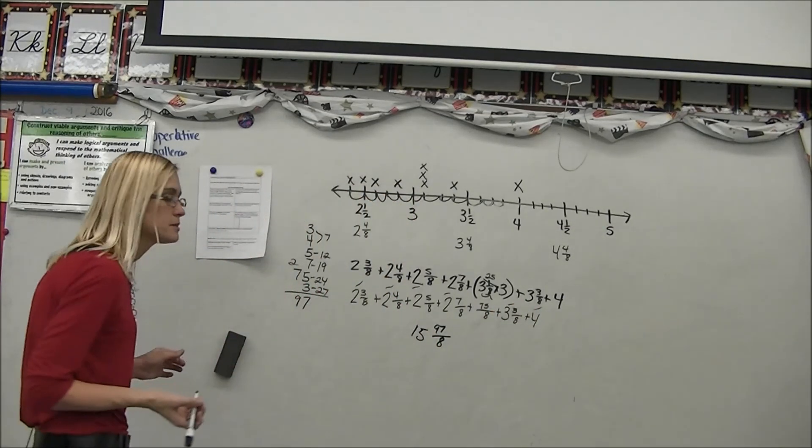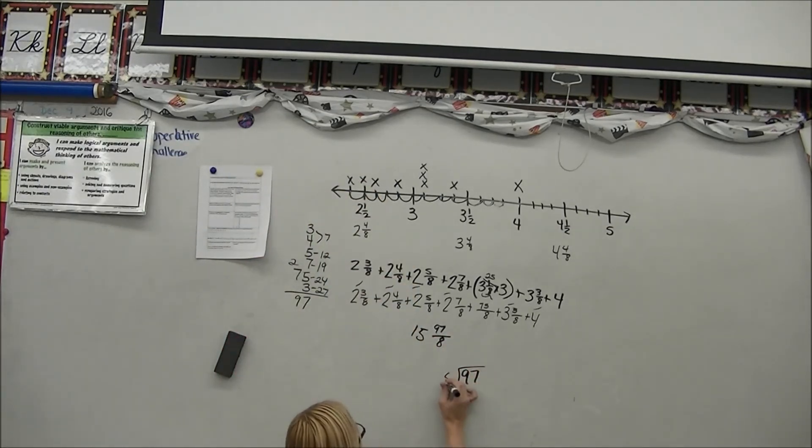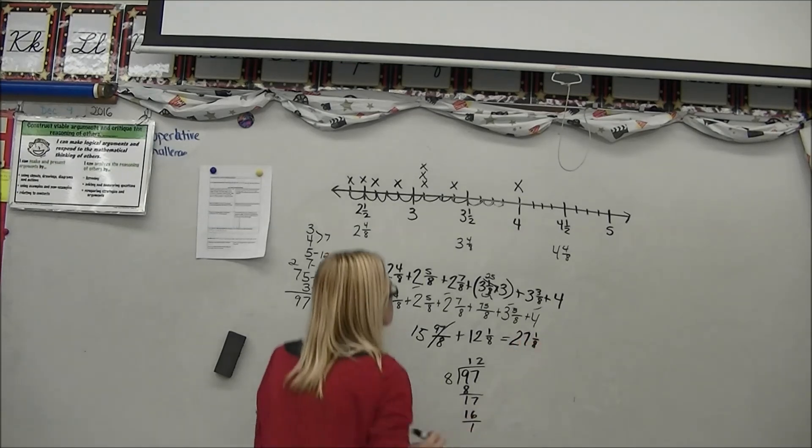So how many times can 8 go into 97? 97 divided by 8 can go in 12 times, which leaves me with 1 eighth as a remainder. So plus 12 and 1 eighth is going to equal 27 and 1 eighth as her total.